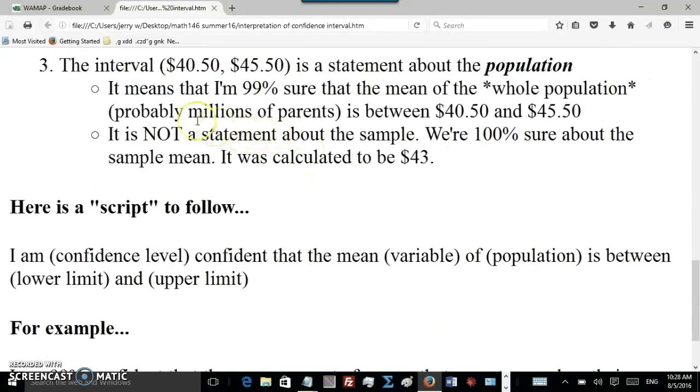All right, the third point is the interval, $40.50 to $45.50, is a statement about the population. It means that you're 99% sure or confident that the mean of the whole population, which could be millions of parents, maybe your population is all parents in the United States or something like that, and you had a random sample of 30 parents. So the sample is a tool to estimate something about the population. That's the way to think about it. We don't really care about the sample itself. We care about what can we infer about the whole population.